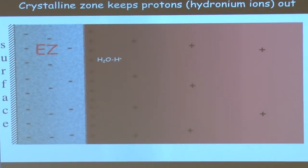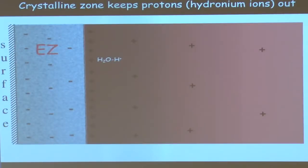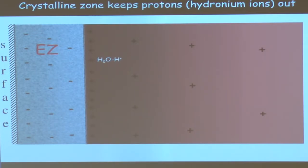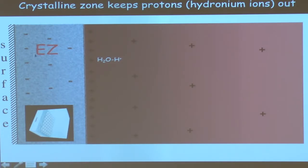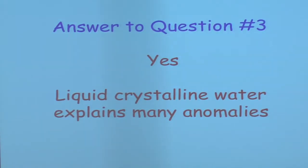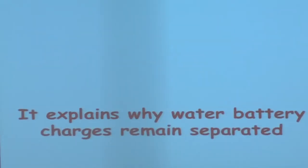There's an apparent paradox: a negative region next to a positive region should annihilate. But this doesn't happen — the potential difference persists for days. The reason is that the EZ structure has very small openings, and hydronium ions (a proton attached to water) are larger than the water molecule itself. So even though they want to penetrate the negative zone, they can't — the charge separation is maintained.